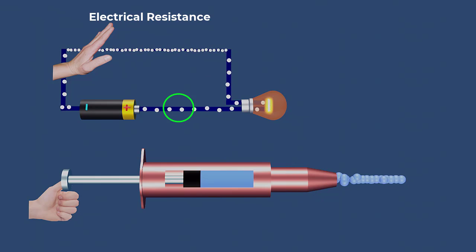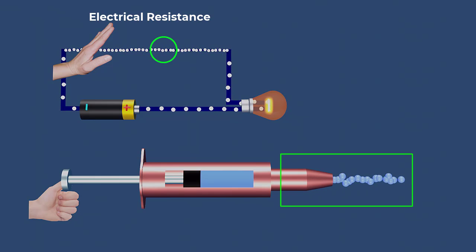A thick conductor is like a wider opening, offering less resistance and allows more amperes to pass. In contrast, a thin conductor is like a narrow opening, offering more resistance and restricting the flow of current.